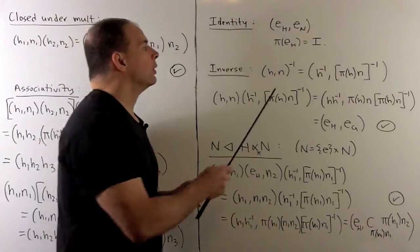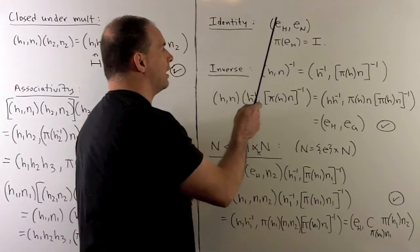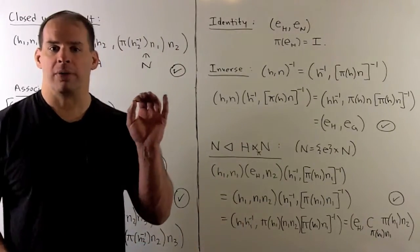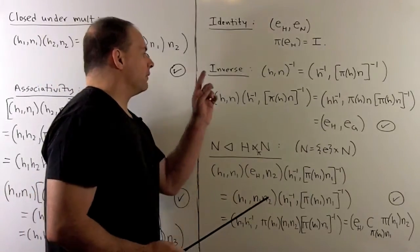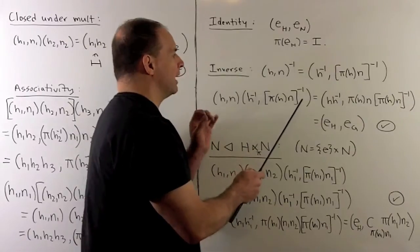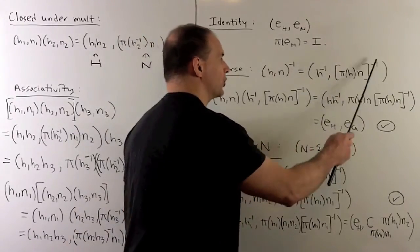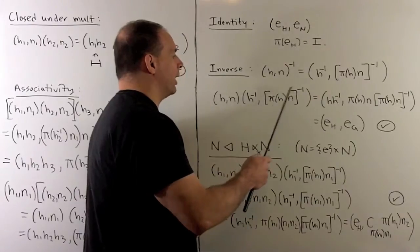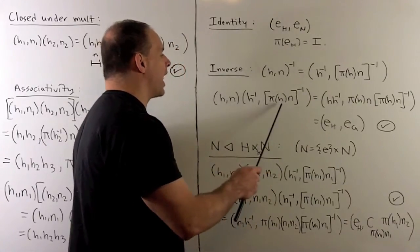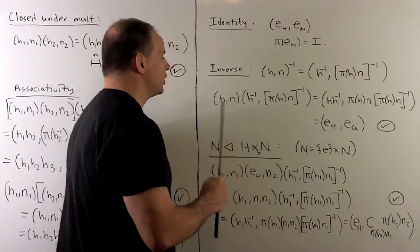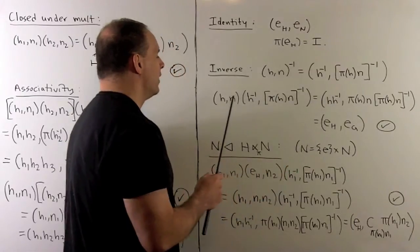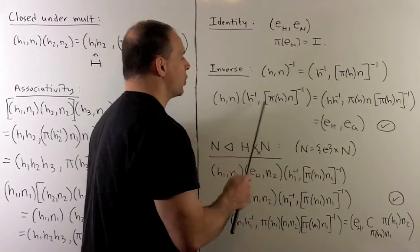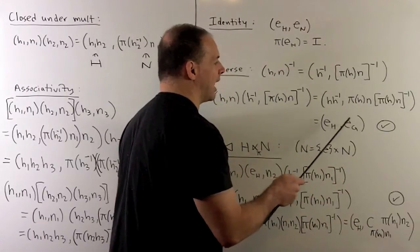For the identity element, we'll use the obvious choice: identity of H cross identity of N. We note that pi of the identity of H is going to give us the identity map. For inverses, (H, N) inverse is going to be equal to (H inverse, pi(H) applied to N inverse). The idea is: put X in for pi(H) N inverse, do your multiplication, and see what you need for X to get the identity. Checking this: we'll have H H inverse, then apply pi to this element's inverse — which is pi(H) — and apply that to N. This gives us the identity, as expected.